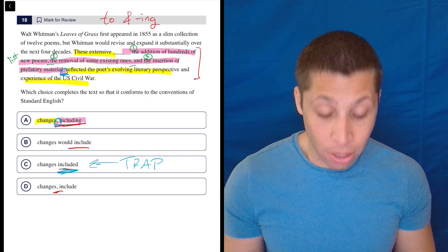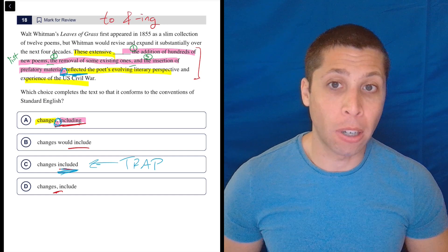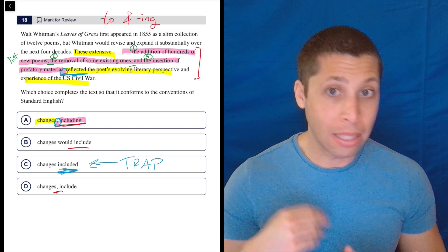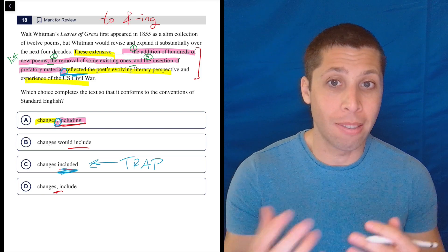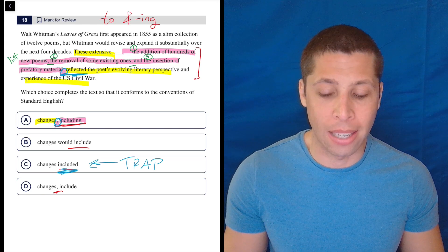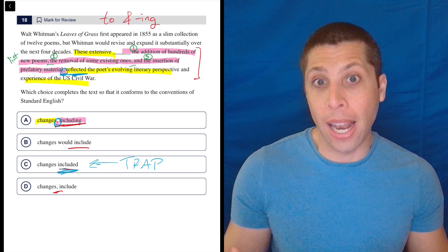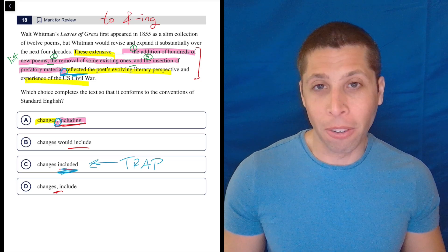But we have that later with the word 'reflected.' So the word 'reflected' is the main verb of the sentence here, and we don't want to double up. So 'included' can't work because we have basically two sentences smooshed together. It doesn't make any sense. So we need the 'including' part to be an extra clause, and -ing verbs usually do that.